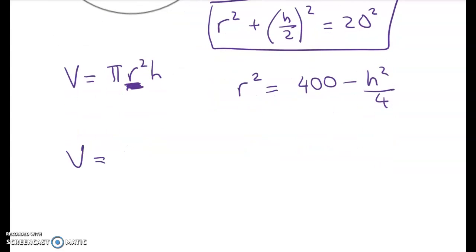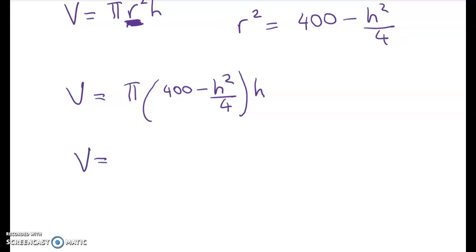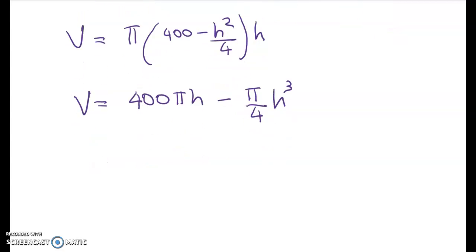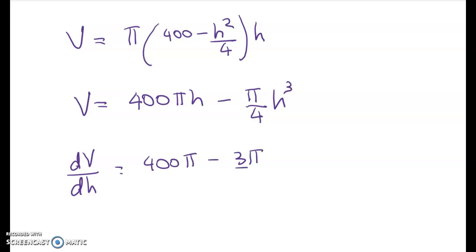Substituting that into my volume expression gives me V equals pi times this times H. Now we've got a pretty simple expression to differentiate. So dV by dH will be 400 pi minus 3 quarters of H squared. And that has to equal 0 for a maximum.